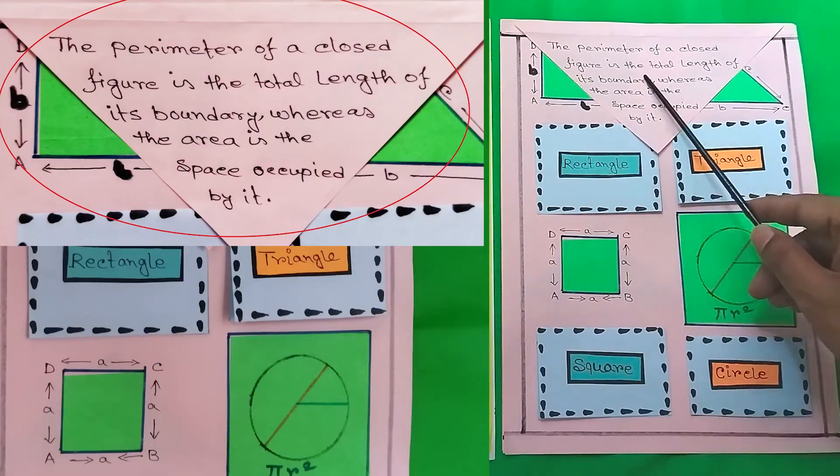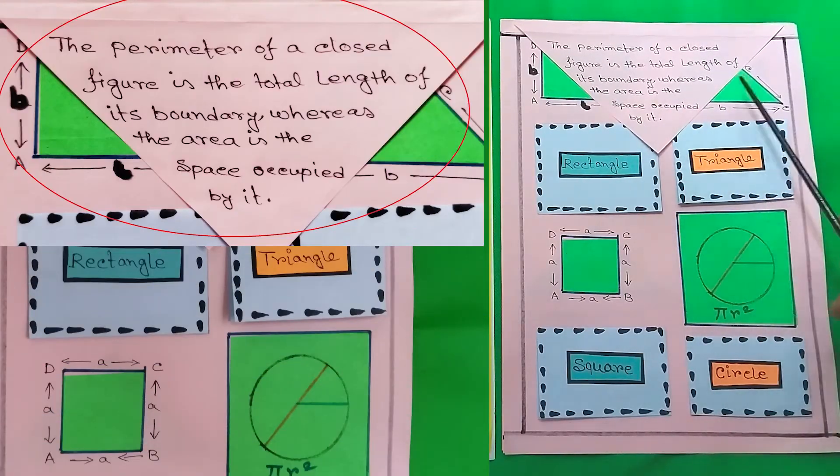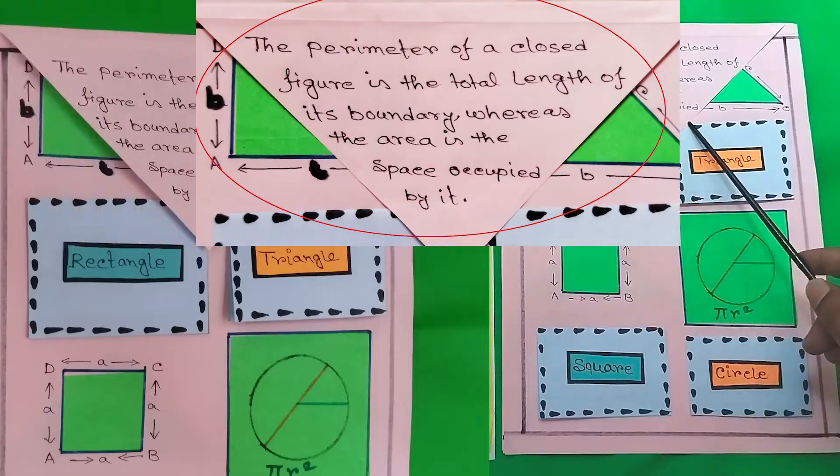The perimeter of a closed figure is the total length of its boundaries where the area is the space occupied by it.